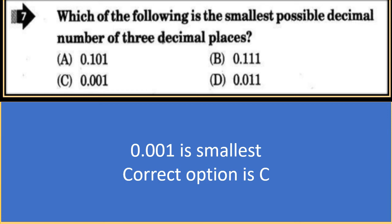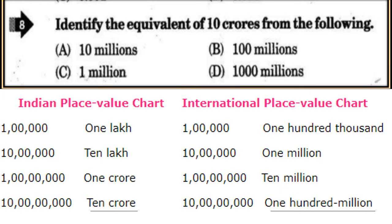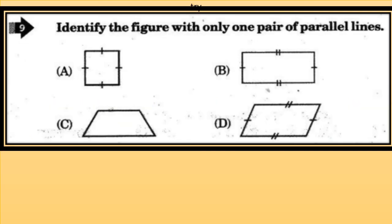Which of the following is the smallest possible decimal number of three decimal places? Option C, 0.001, is the smallest possible decimal number of three decimal places. For question 8, identify the equivalent of 10 crores: using the Indian and international place value chart, 1 crore = 10 million, so 10 crores = 100 million. The correct option is B.